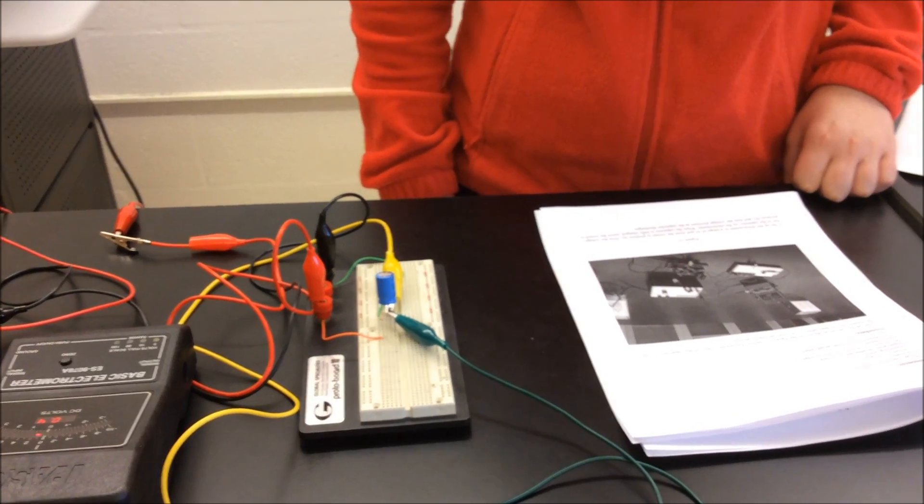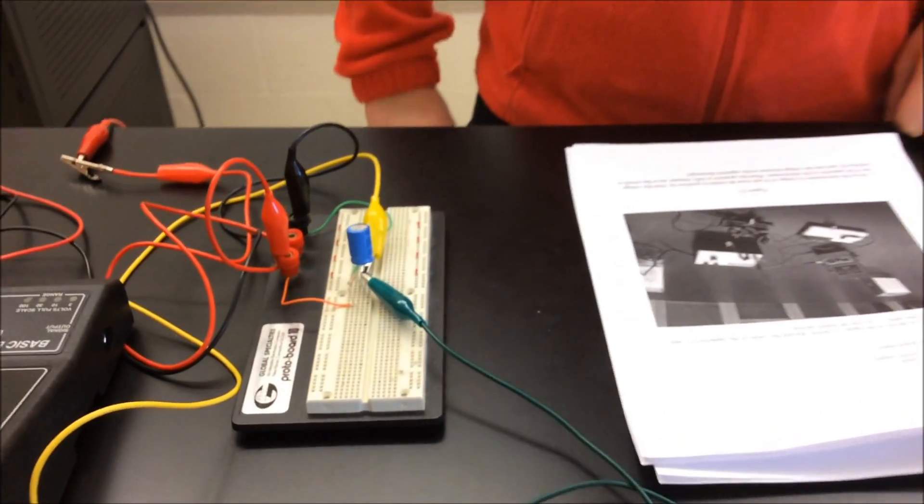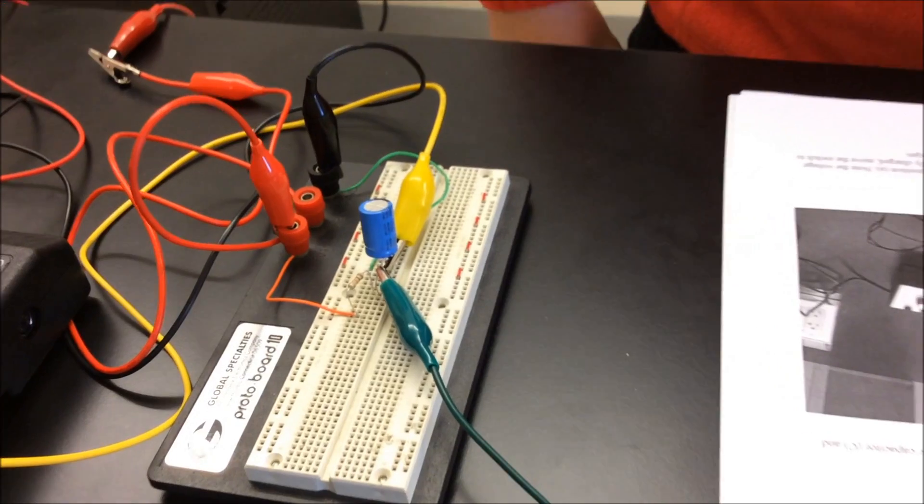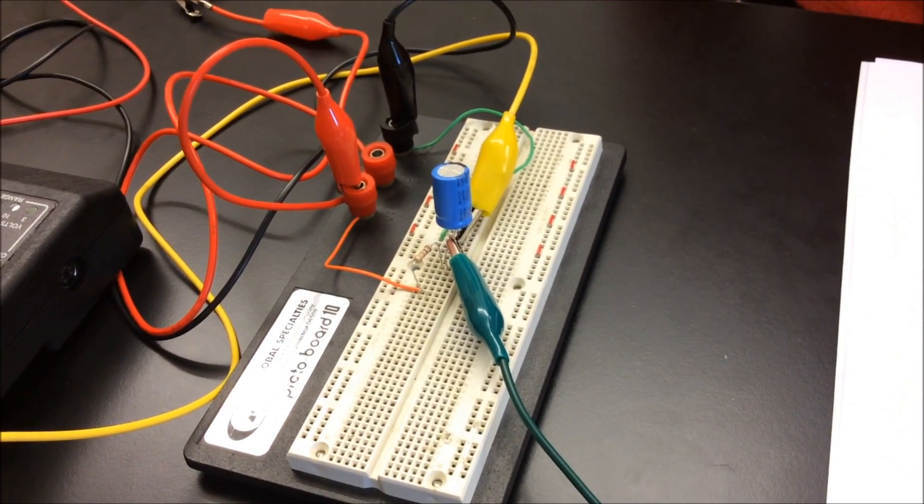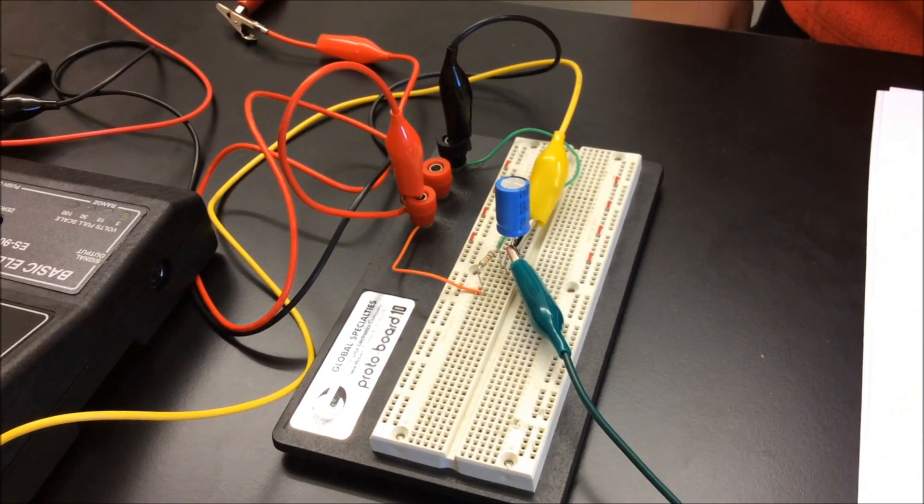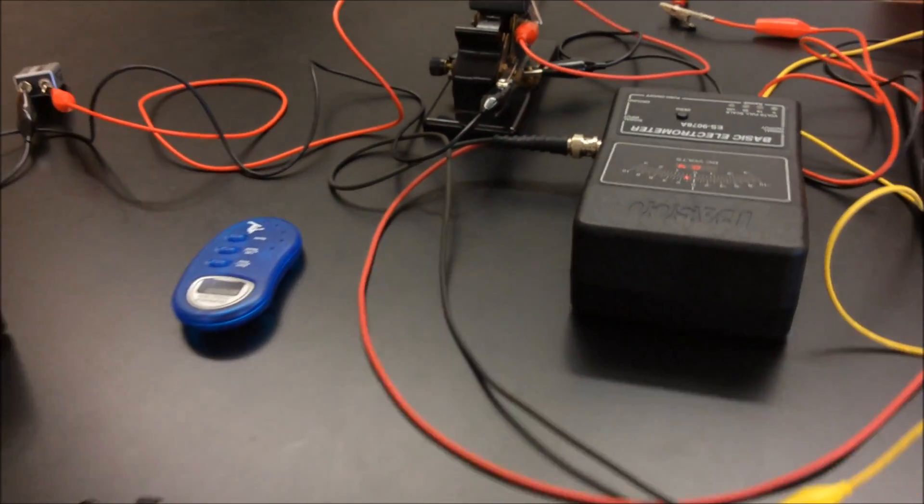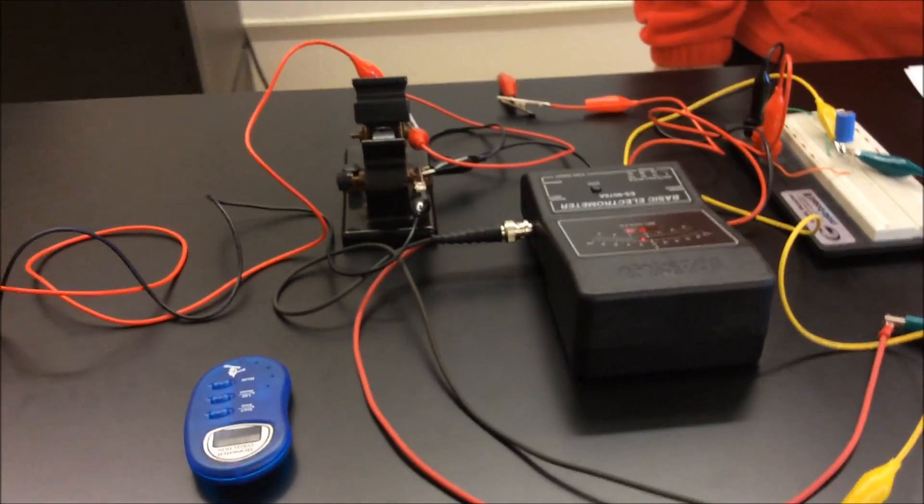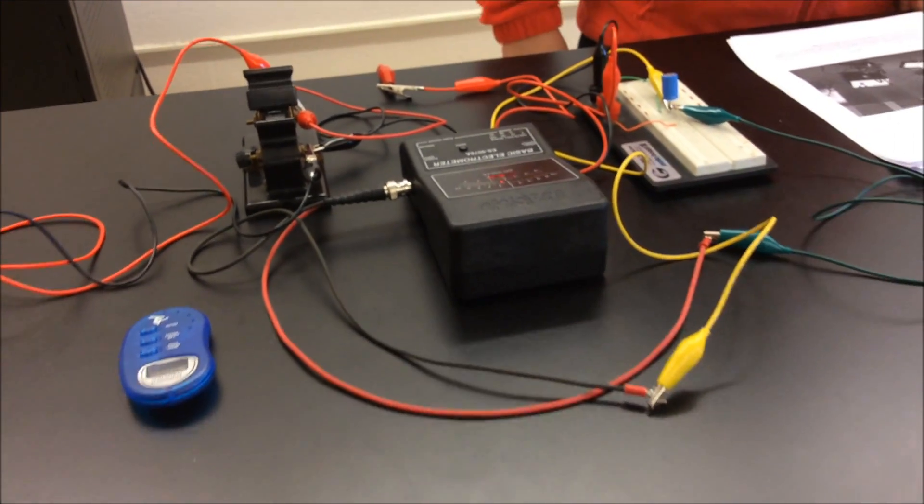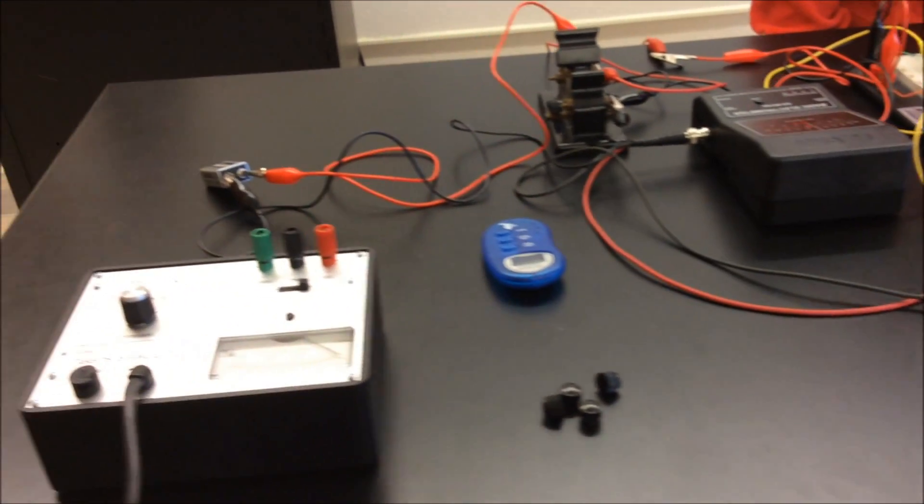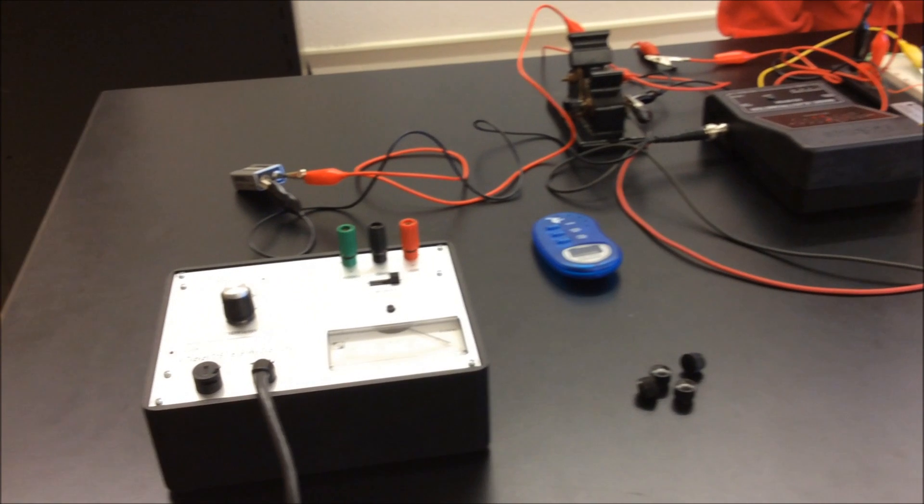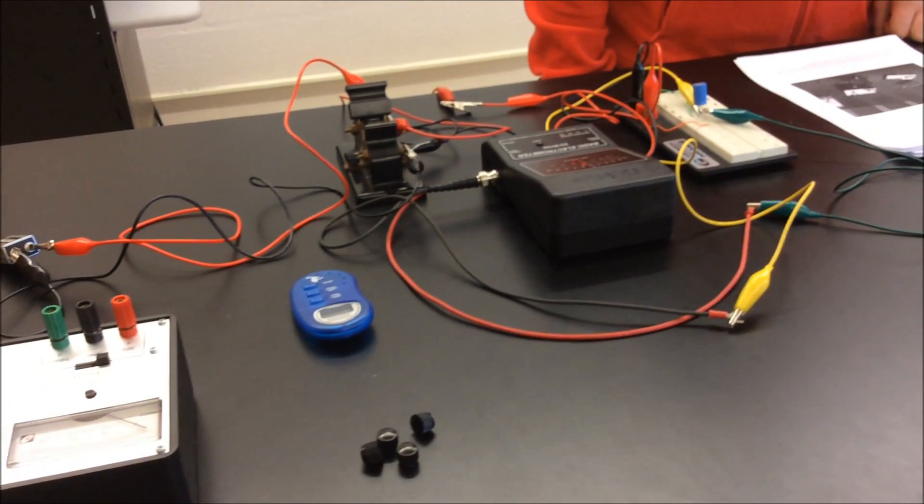So the equipment that you will need is a large capacitor of 1,000 microfarads, a stopwatch, a resistor of about 10 kilo ohms, connecting wires, a single pole double throw switch, a DC source, which is 12 or less volt power supply, an electrometer, and two sheets of Cartesian graph paper.